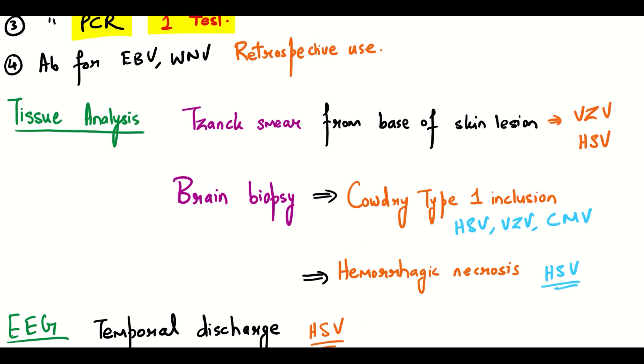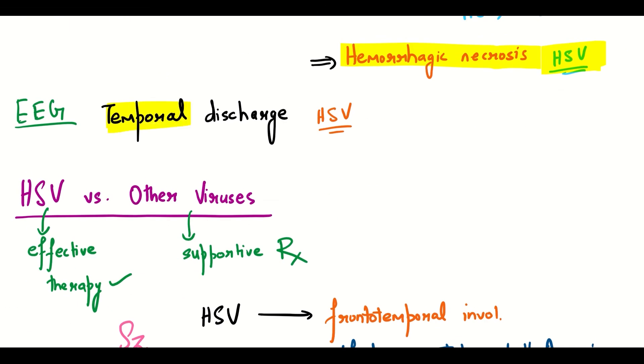Tzanck smear is done for varicella zoster and herpes simplex. Brain biopsy will show Cowdry type 1 inclusion and hemorrhagic necrosis. Hemorrhagic necrosis is specific for herpes simplex.